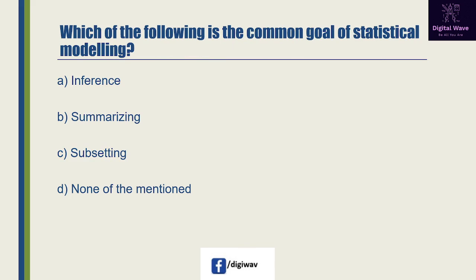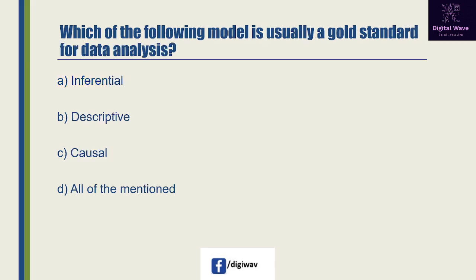Next question: which of the following is the common goal of statistical modeling? Options are: inference, summarizing, subsetting, and none of the mentioned. The right answer will be A: inference, because inference is the act or process of deriving logical conclusions from premises known or assumed to be true.